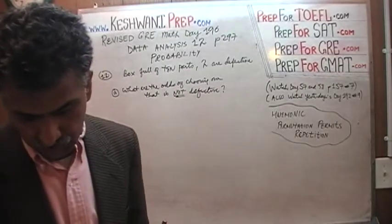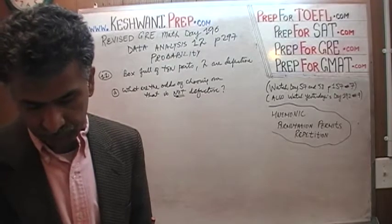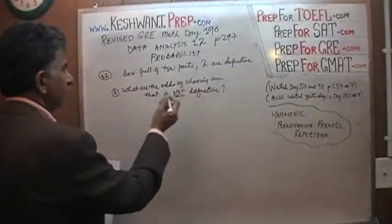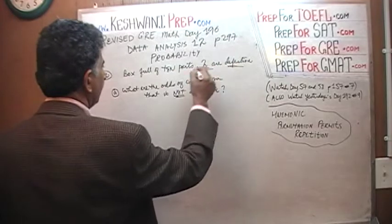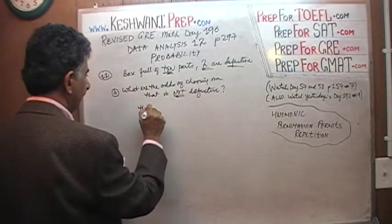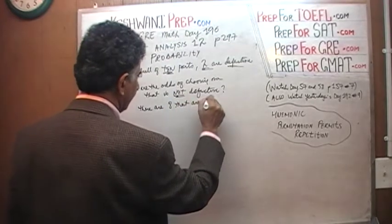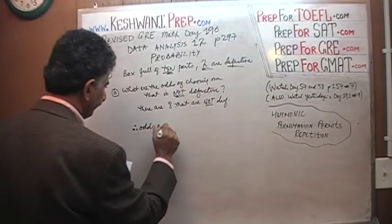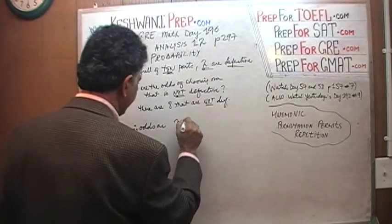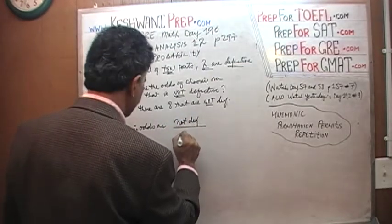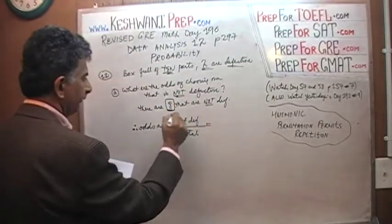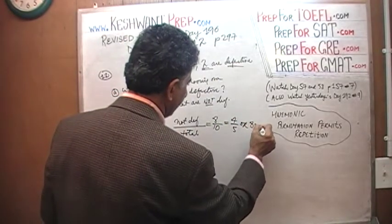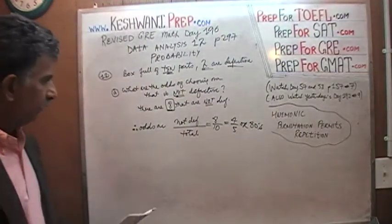Part A says: if you choose one part at random from the box, what is the probability that it is not defective? If there are 2 defective out of 10, there are 8 that are not defective. Therefore, the odds are not defective over the total — 8 out of 10, or 4/5, or 80%. Part A was very simple and very straightforward.